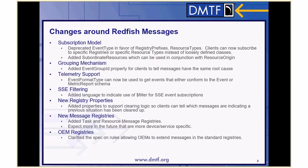We changed the subscription model. We're deprecating event type in favor of registry prefixes and resource types. We've come up with a grouping mechanism. We've added telemetry support so you can get events and metric reports — you'll have to watch the telemetry video for how to set up metric reports, but you can get those across the stream. We've added SSE in a previous version and come up with a way of filtering messages across server-side events. We've come up with some new registry properties and new message registries, and clarified the rules about how OEMs extend and modify DMTF standard registries.